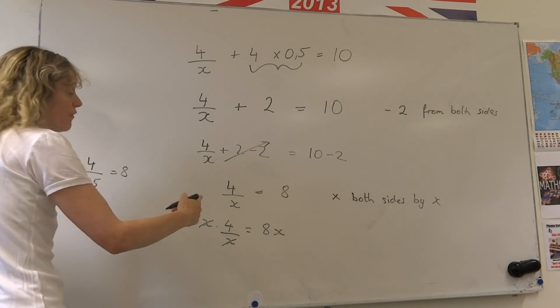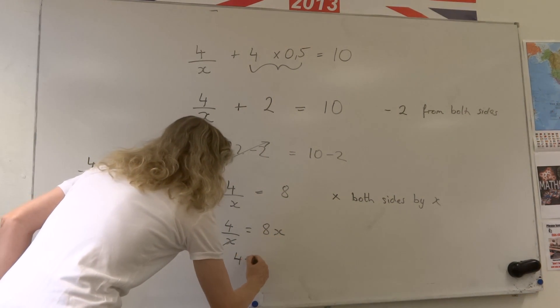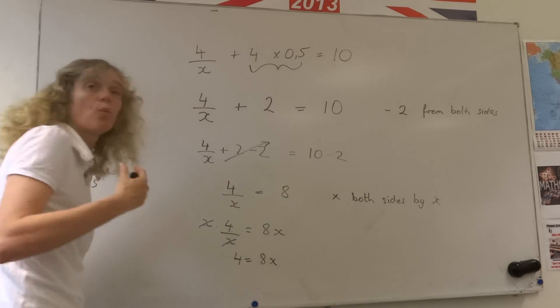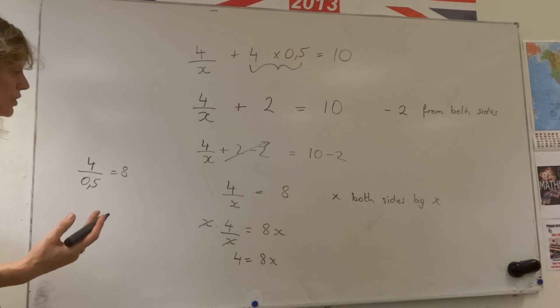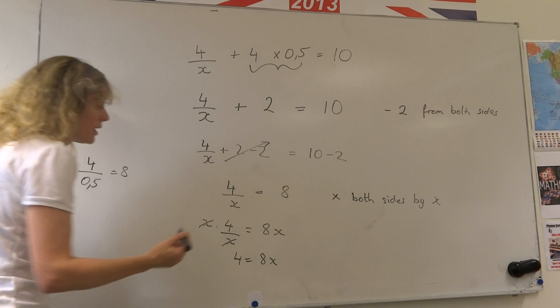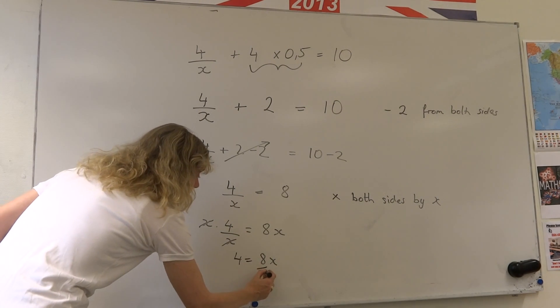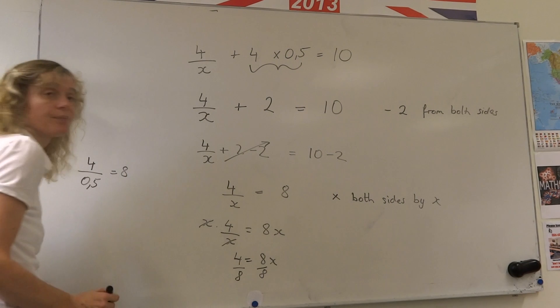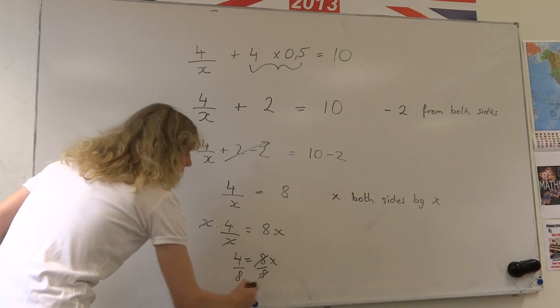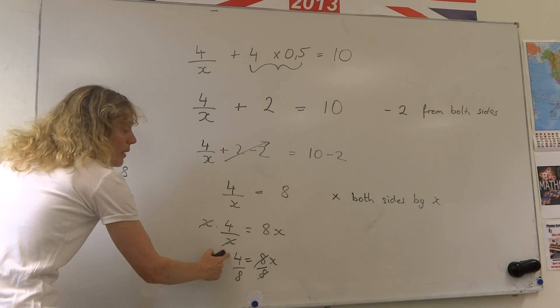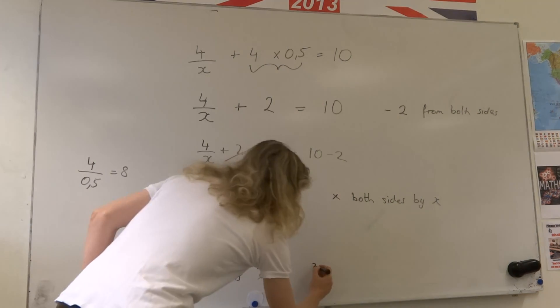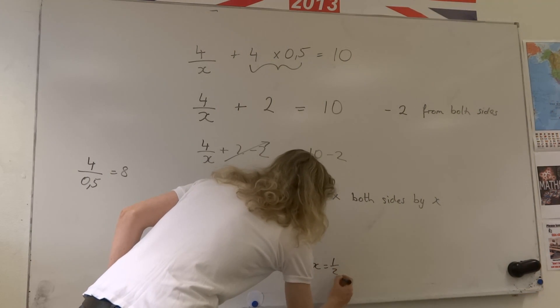So if I know that 4 equals 8x, I don't want to know what 8 lots of x are. I want to know what 1 lot of x is. So I divide both of my sides of the equation by 8 here. 8 divided by 8 gives me 1 here. 4 divided by 8 equals a half. So I get here my answer, x equals a half.